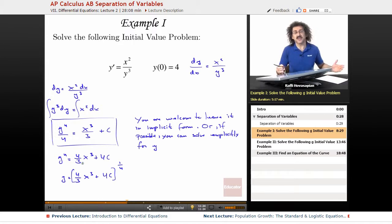So this is the explicit. It doesn't matter. It's a personal choice, however far you want to take it. So now let's go ahead and deal. So this is the general solution, the one that involves the constant. Now let's deal with the initial value problem.